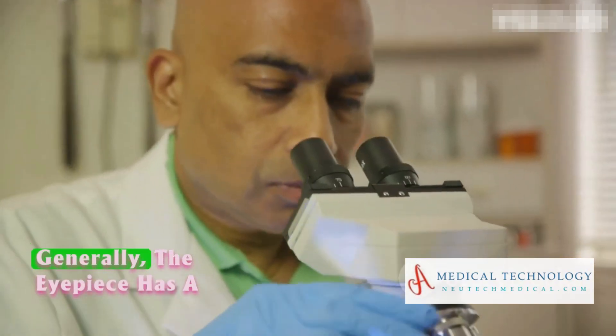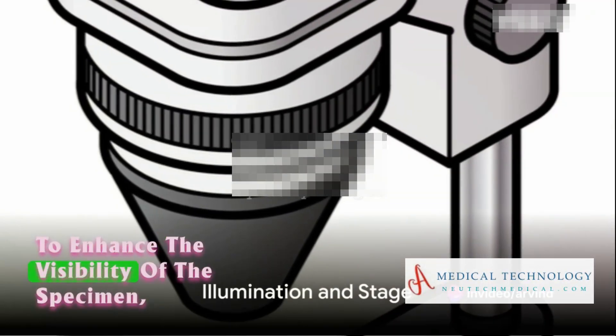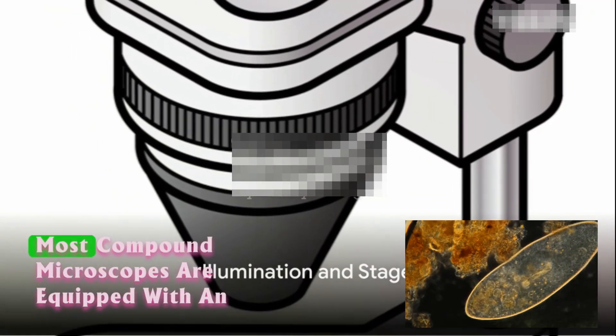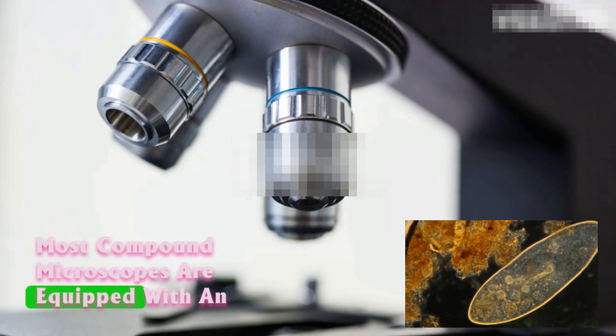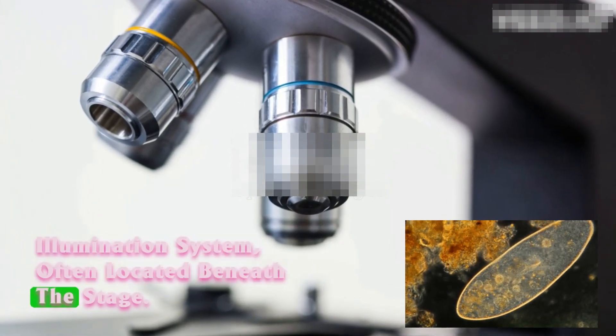Generally, the eyepiece has a standard magnification of 10 times. To enhance the visibility of the specimen, most compound microscopes are equipped with an illumination system, often located beneath the stage.